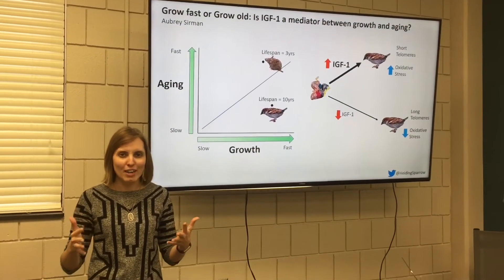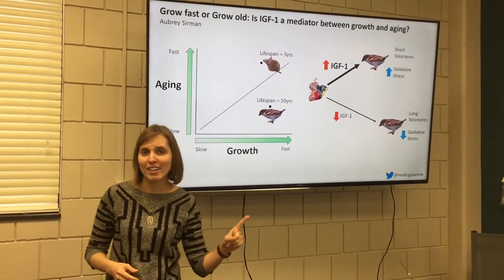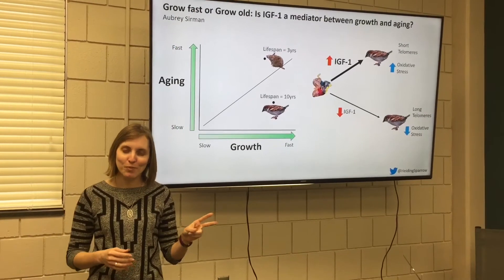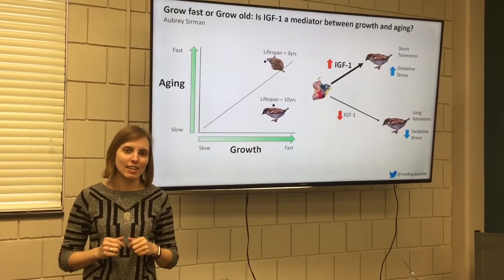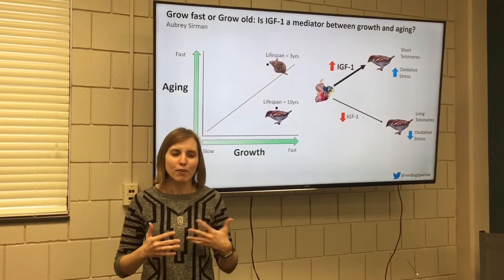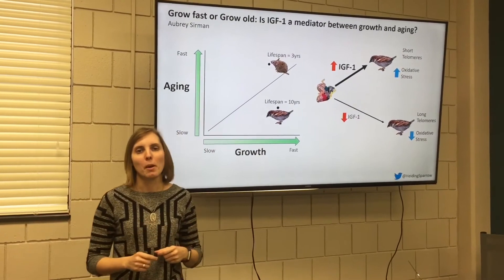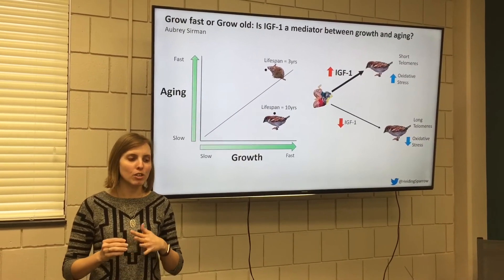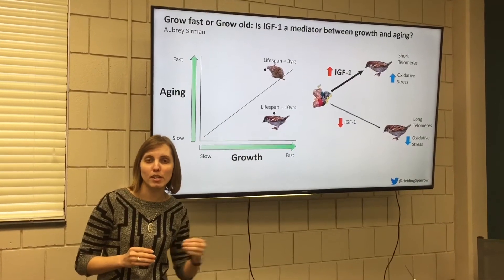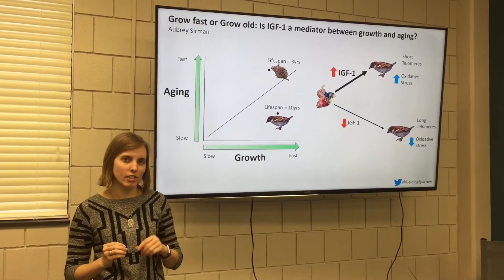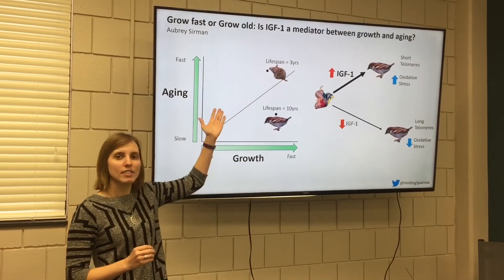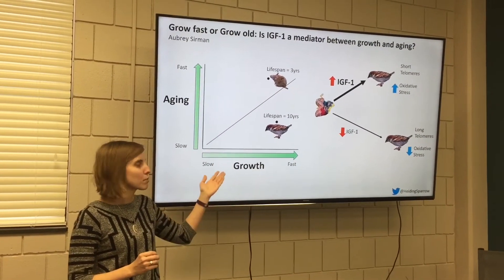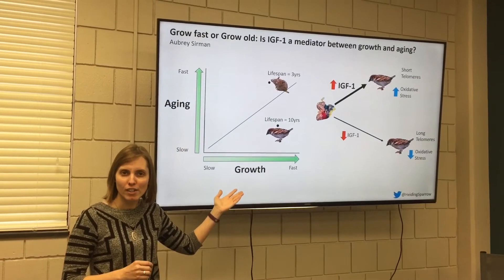You're probably wondering by now, why birds? Well, one, birds are awesome, and two, they might also offer unique insight into this trade-off. For example, if we look within a group, mammals of a similar size grow and age about the same. But when we look across a group, like from mammals to birds, things change. So for example, this mouse and this house sparrow are about the same size, but this house sparrow can live nearly three times longer.